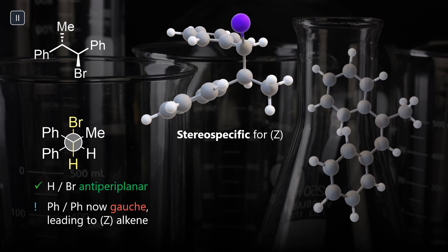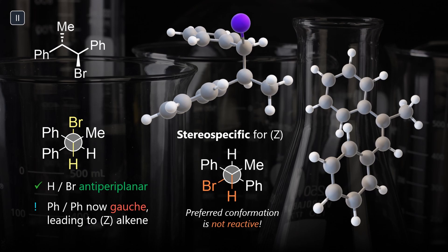Like our very first example, the single bond rotation equilibrium is clearly not favoring this setup. Most molecules are chilling in a more stable conformation that does not allow for anti-elimination. This leads to a 10 times slower reaction compared to the other diastereomer.